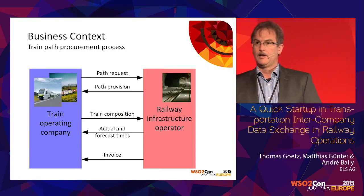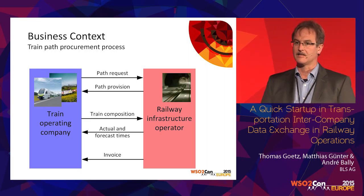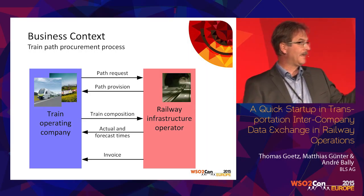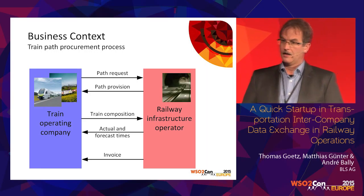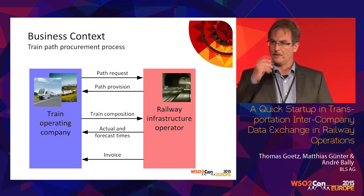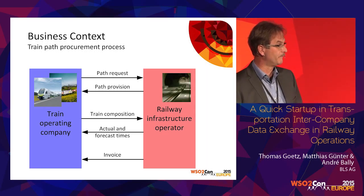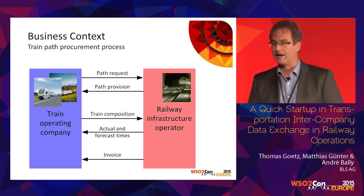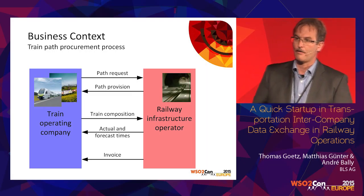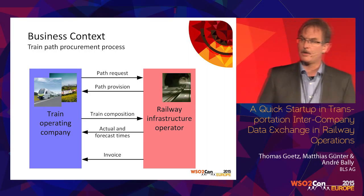Now to the problem. The European Commission changed rules in the railway business in the 1990s: infrastructure operators were required to separate from train operating companies. The reason for this was that the European Commission wanted to create a more efficient rail network and more competition. So a train operating company wanting to run a train on a network had to request a train path from the infrastructure operator and had to pay for this path.